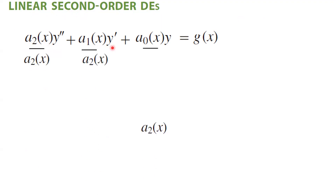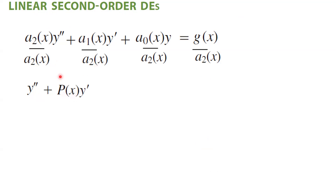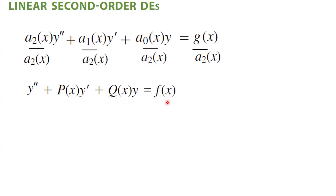That way, we can rewrite this differential equation in standard form: the second derivative of y — note that the a sub 2 terms get cancelled out — plus let us call a1 divided by a2, p of x, times y prime, plus let us call a sub 0 of x divided by a2 of x, q of x, times y, and on the right-hand side, g of x divided by a2, let us call it f of x. How do you solve this differential equation?